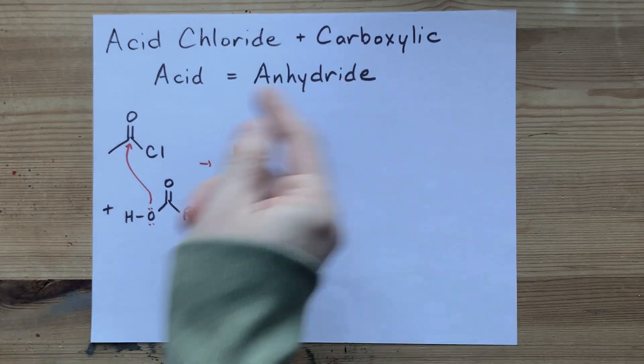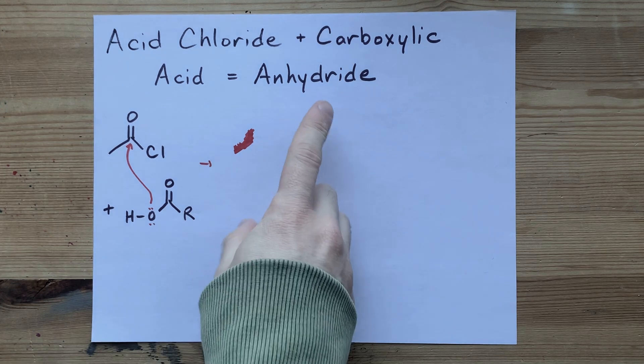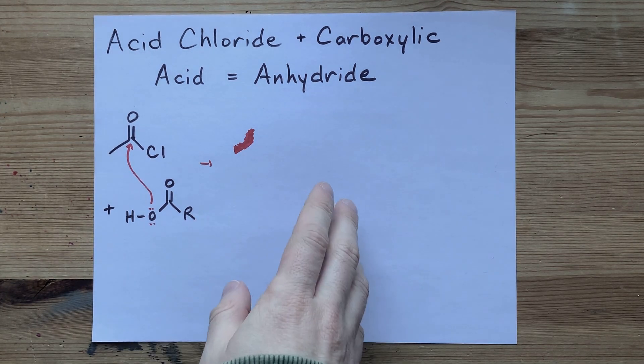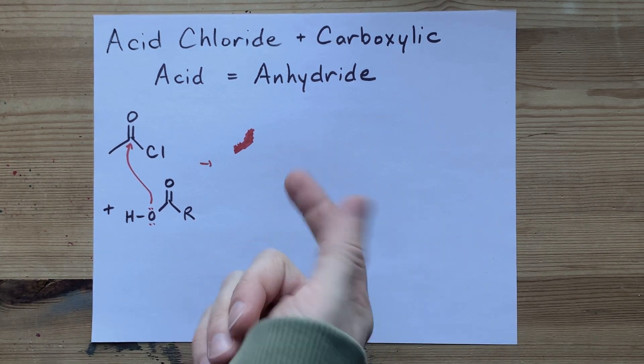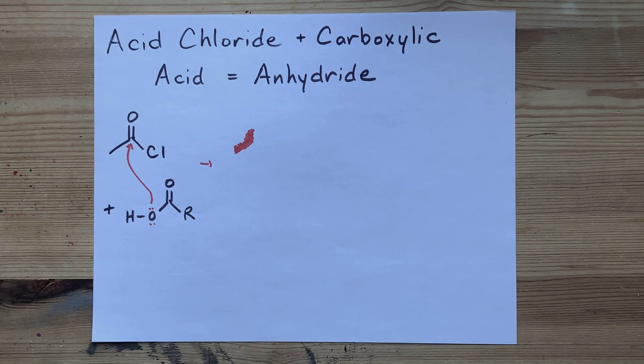Acid chlorides will react with carboxylic acids to produce anhydrides. The mechanism is really similar to how water, alcohols, and ammonia attack acid chlorides.